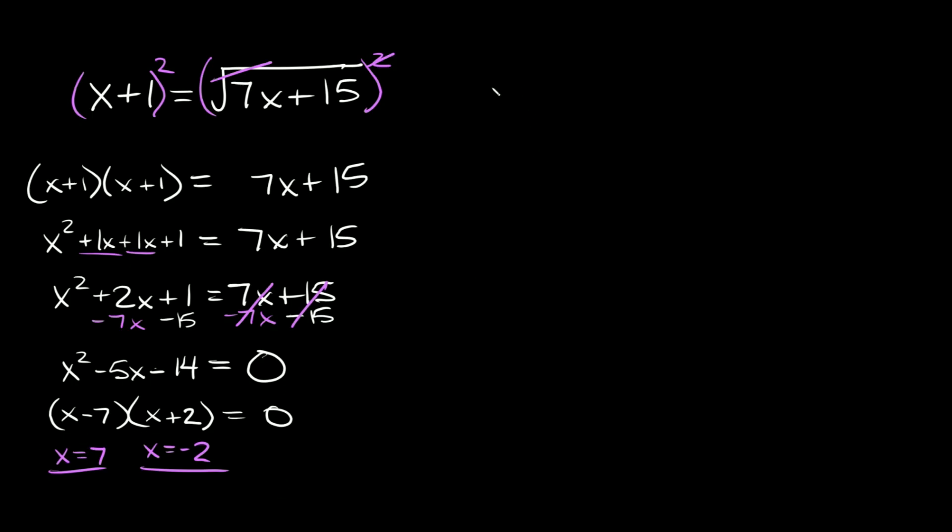So let's start with x is equal to 7. So let's plug in a 7 into this equation right here. So we're going to have 7 plus 1 is equal to the square root of 7 times x, which is 7, plus 15. So then here we get that 8 is equal to the square root of 49 plus 15.